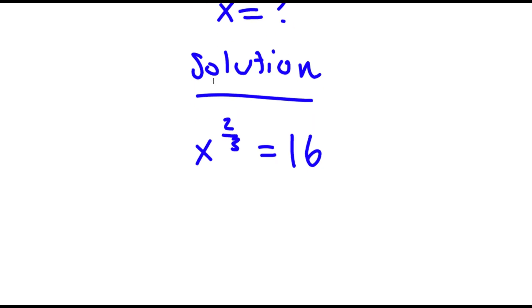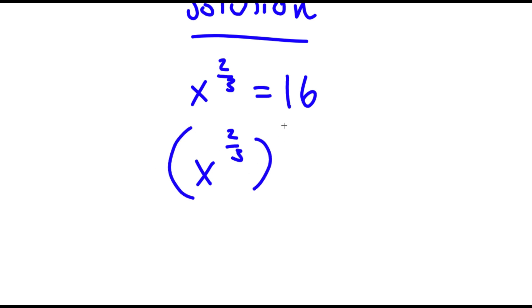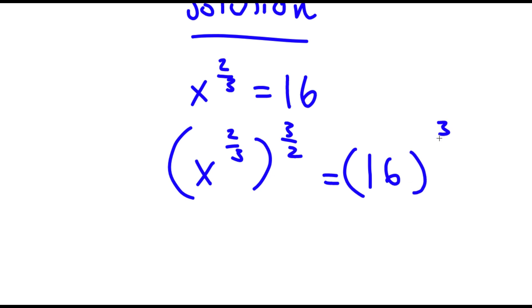Now I'm going to be taking the power of 3 over 2 on both sides. So I have x to the power of 2 thirds, to the power of 3 over 2, is equal to 16 to the power of 3 over 2.